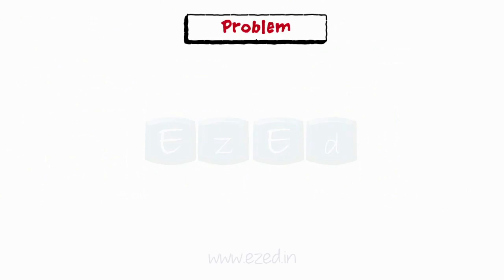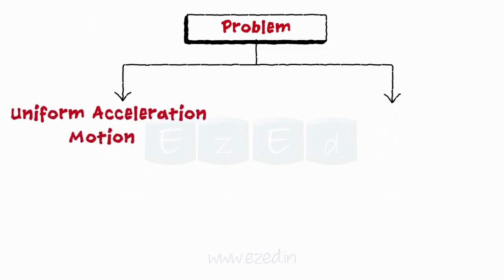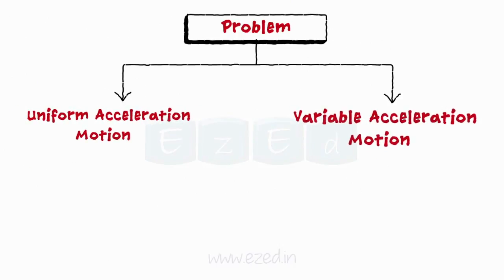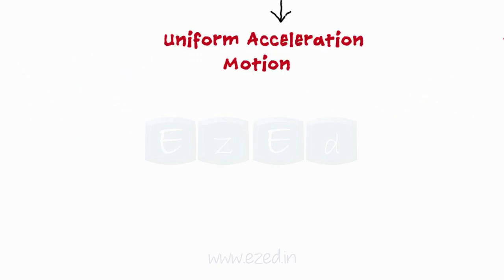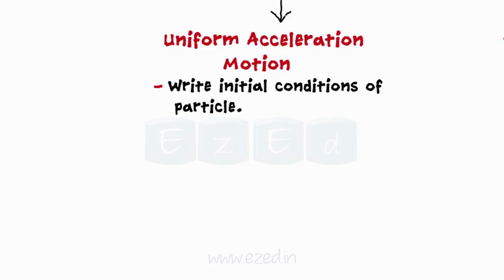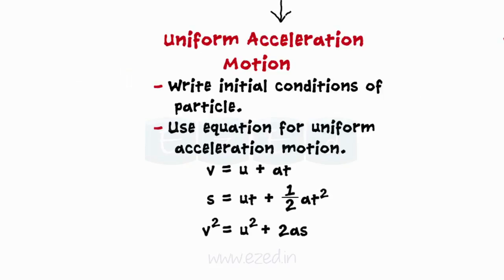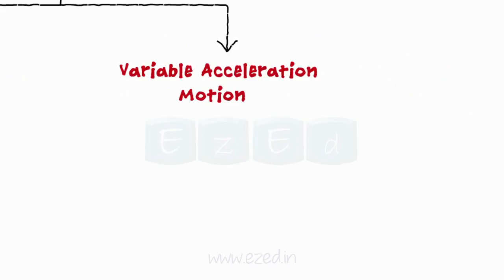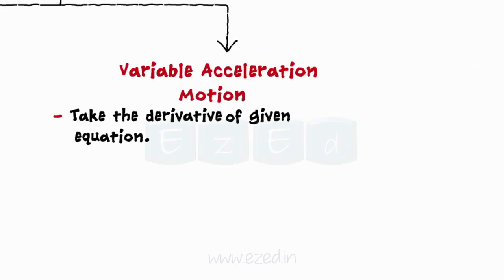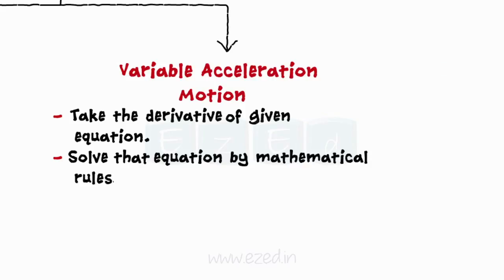Let us consider different types of problems based on uniform acceleration motion and variable acceleration motion. In uniform acceleration motion, we will first write all the initial conditions of the particle and use the uniform acceleration equation to find the unknown. In variable acceleration motion, the acceleration of a particle is given as an equation — we will take the derivative of that equation and solve as per mathematical rules.